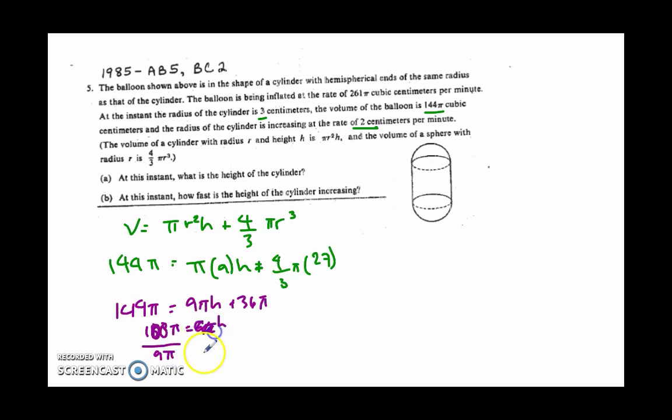So I can subtract 36 pi from both sides and get 108 pi equals 9 pi h. Divide both sides by 9 pi. And let's see, 108 over 9, my pi's cancel. 108 over 9 off of the top of my head is going to be 12. So h is going to be 12 centimeters. So that is part A.